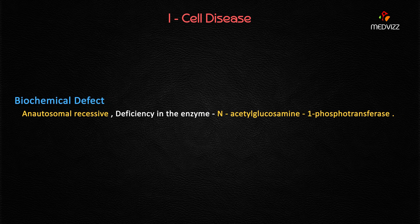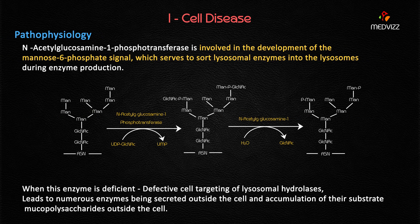I-cell disease is an autosomal recessive disorder caused by deficiency of the enzyme N-acetyl glucosamine-1-phosphotransferase. Everyone calls it lysosomal phosphotransferase in simple language, but the complete name is N-acetyl glucosamine-1-phosphotransferase. The deficiency of this enzyme is what causes I-cell disease.